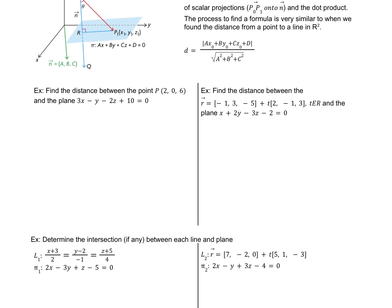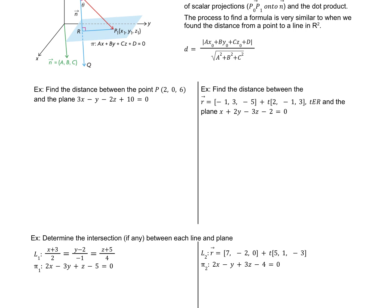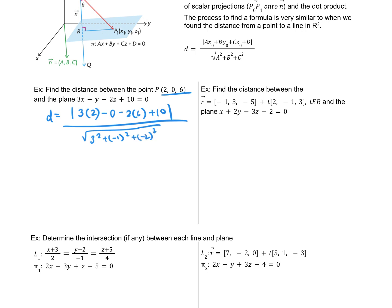Here's what the distance formula looks like — very similar to distance from a point to a line in R2, just with a z-component. Take the absolute value of plugging your point into the Cartesian equation, divided by the magnitude of the normal. For the point (2, 0, 6) and the plane 3x - y - 2z + 10 = 0: |3(2) - 0 - 2(6) + 10| / √(9 + 1 + 4) = |4| / √14. Rationalizing and reducing gives the final distance.